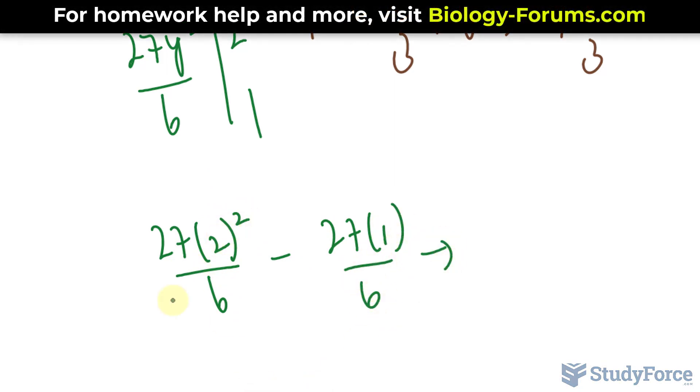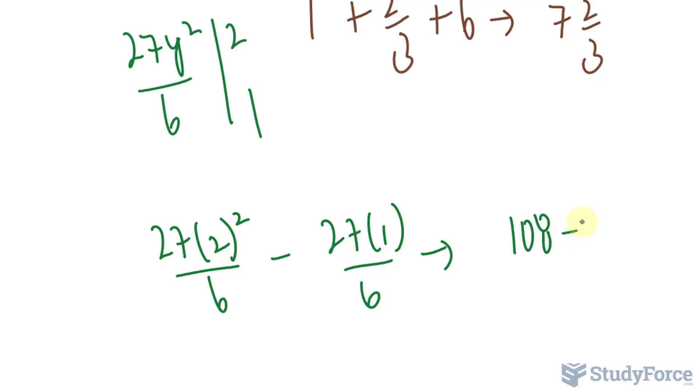2 to the power of 2 is 4. 4 times 27 is 108. 108 minus 27 over 6. Whatever that is equal to divided by 6 is your final answer for question B.